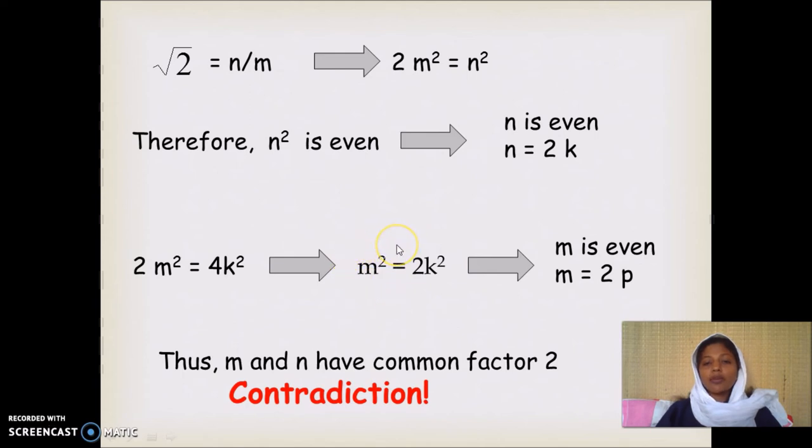If you take the square root of m squared, what you get is an even number. So m is an even number. Suppose if we represent m by some factor 2p. Since it is even, p can be anything.